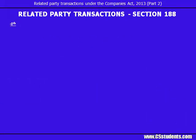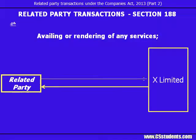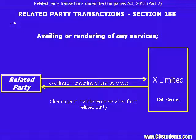The fourth is availing or rendering of any services. This point talks about service-related transactions — either the company is providing services to the related party, or the related party is providing services to the company. Both transactions need to comply with the consent of the Board and, if required, by special resolution. For example, if X Limited runs a call center and one of its related parties provides cleaning and maintenance services, it needs to comply with the provisions of Section 188.